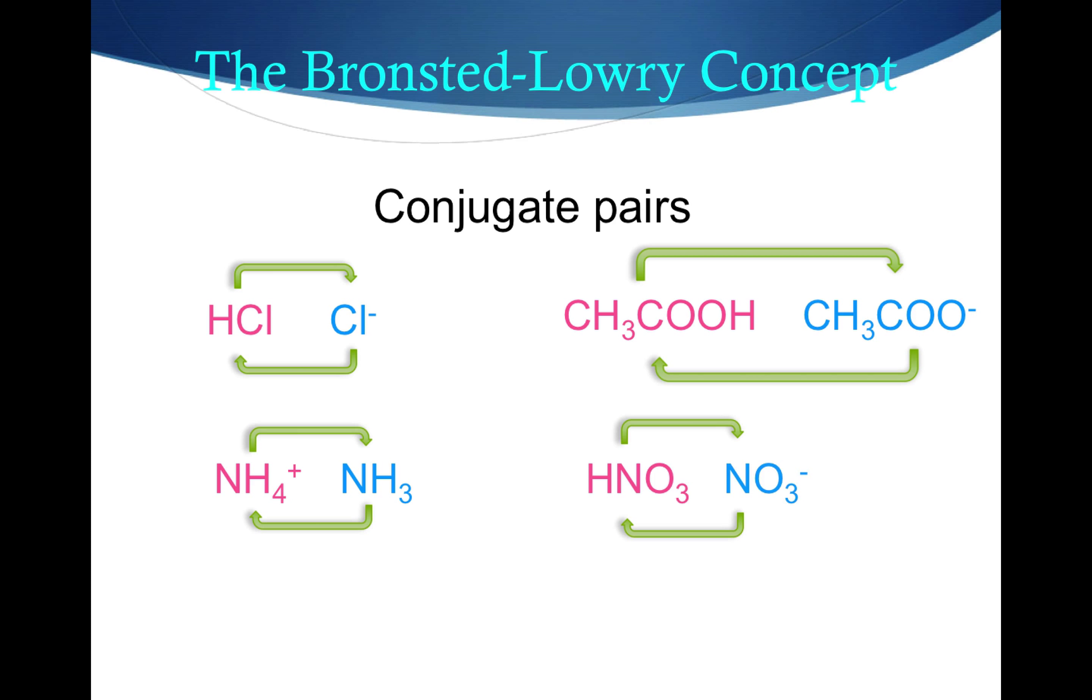Now ammonia is considered a strong base from table N, and that would mean that the ammonium ion is a weak acid. Take a look at these conjugate acid-base pairs, HCl and Cl negative, NH4 and NH3, CH3COOH and the acetate ion, and then HNO3 and NO3. Well, how do they differ? They differ by a hydrogen ion transfer. Notice that the acid has one more hydrogen than its conjugate base.